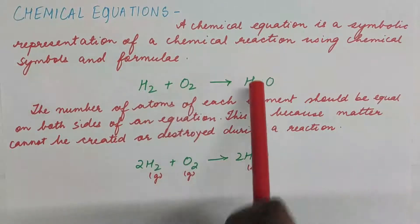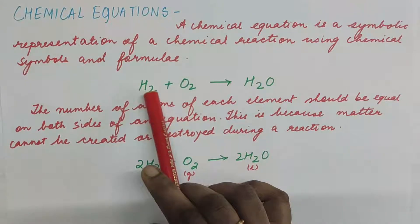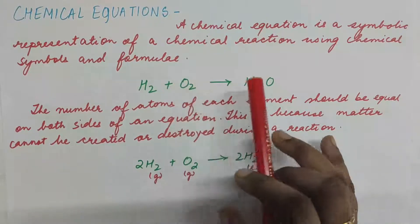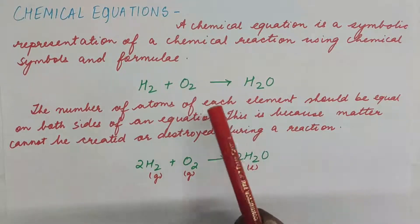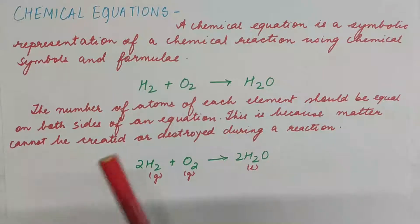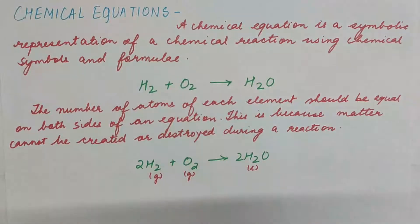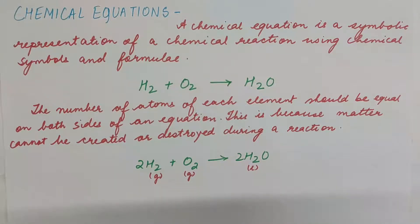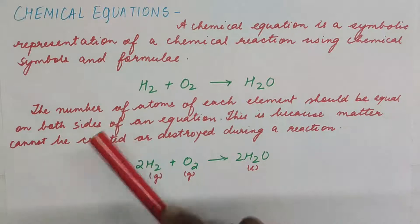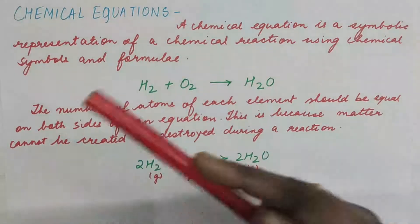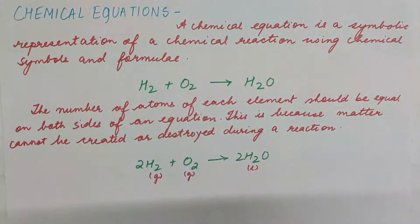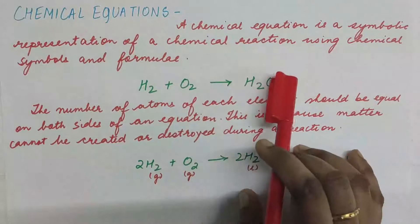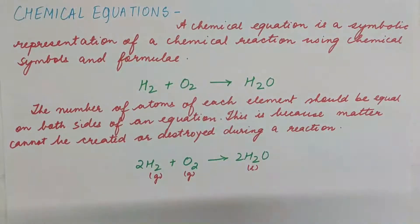The previous word equation — hydrogen plus oxygen forms water — is shown here in chemical equation form: H₂ plus O₂ forms H₂O. The reactants are written on the left-hand side and the product on the right-hand side, separated by an arrow. As the reactants form the product, there is a rearrangement of atoms, and the number of atoms on the reactant side and the product side should be equal.